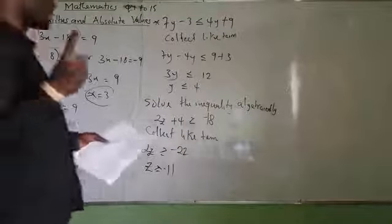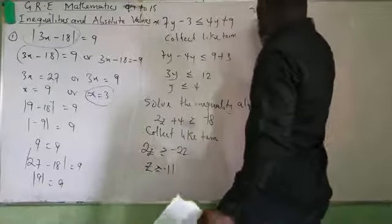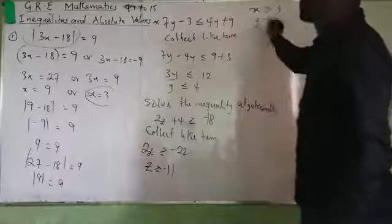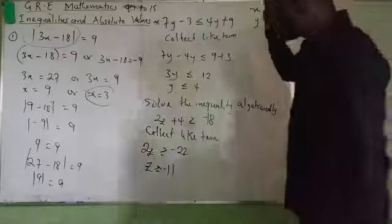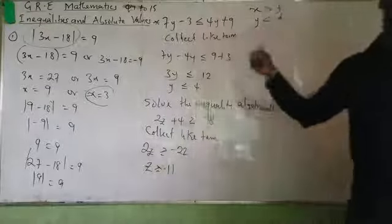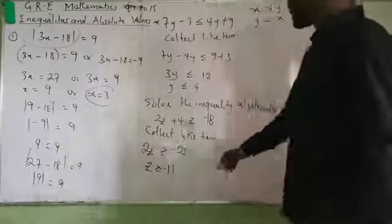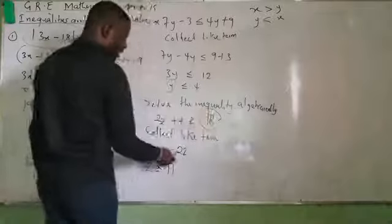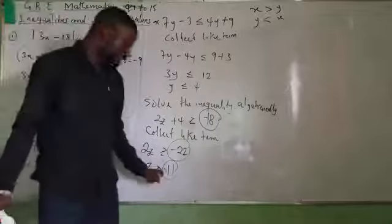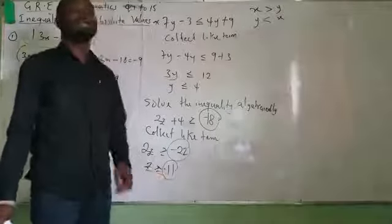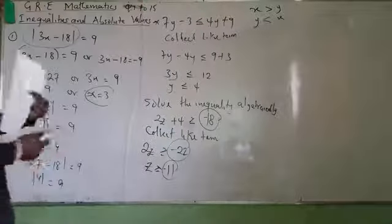There are two things that normally change inequality signs. The first is when you flip a fraction upside down. Another is when you are going from minus to plus — the inequality sign will also change. For instance, here it does not change because we continue with minus. But if we had arrived at plus 11, the inequality would change.